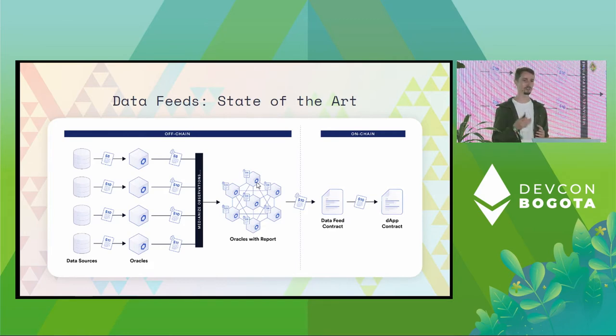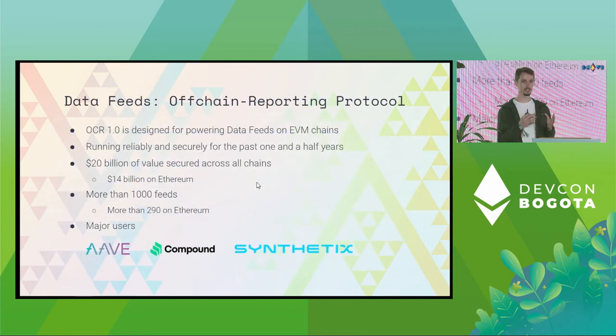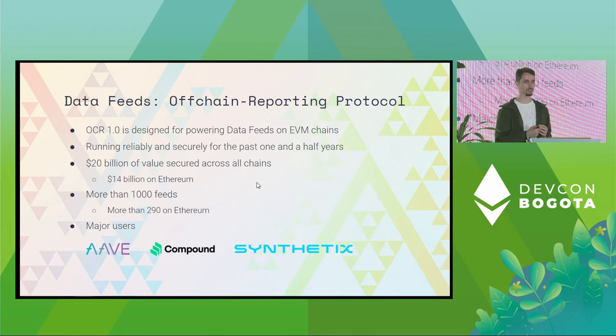For example, during times of chain congestion, this is very desirable. This is how the Chainlink off-chain reporting protocol works.